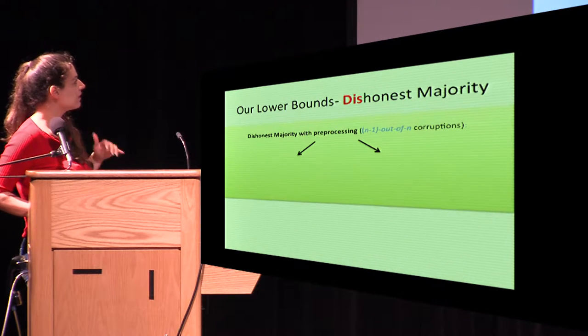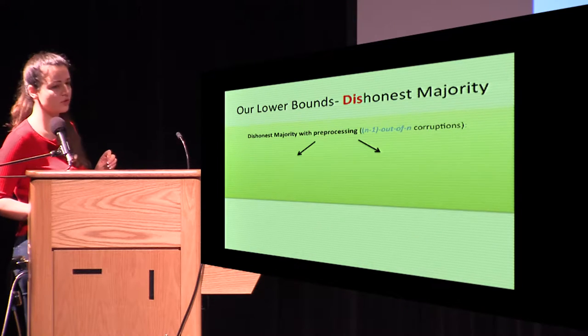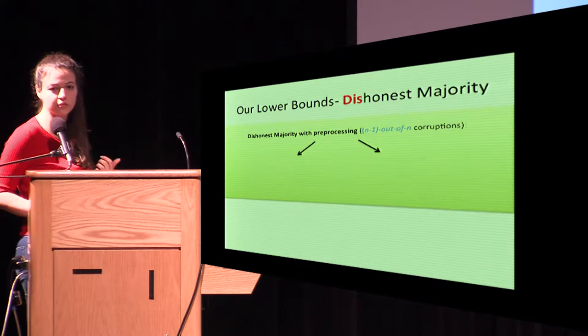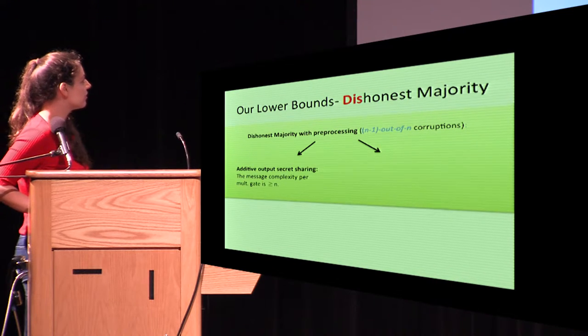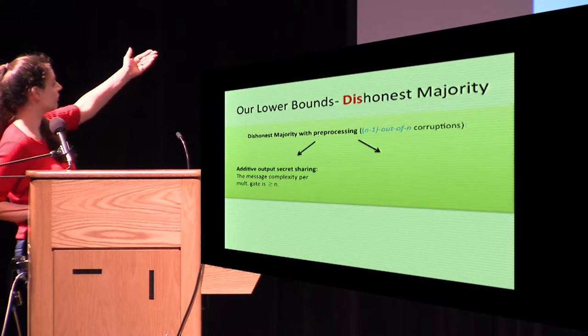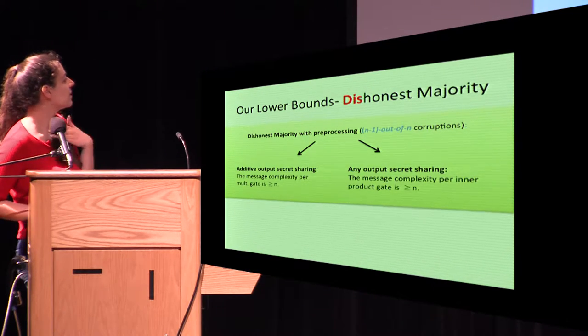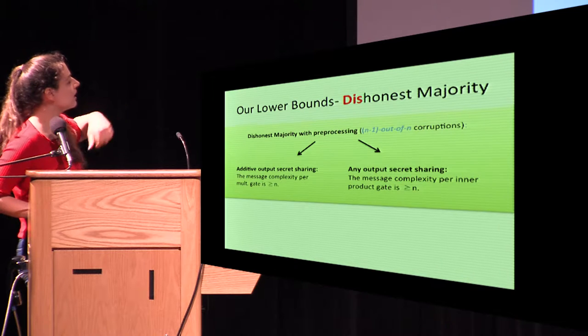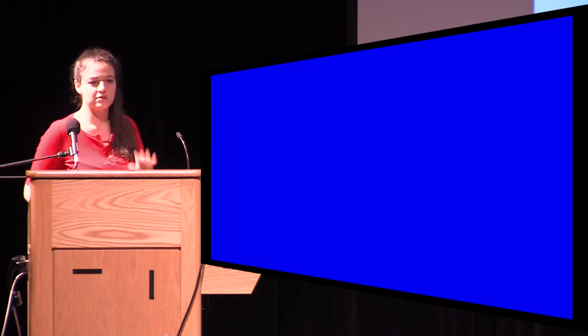Now moving to the dishonest majority setting, where we assume pre-processing — the only way to do dishonest majority in the information-theoretic setting. For the proof I'll simplify by showing the bound for t rather than 2t. This is a warm-up that is easy to see.